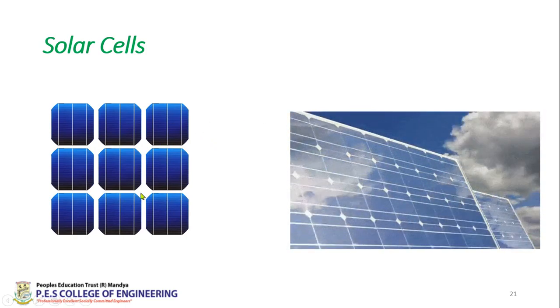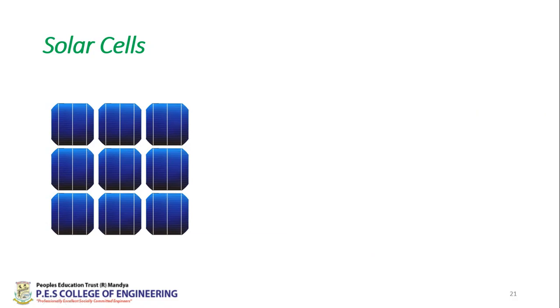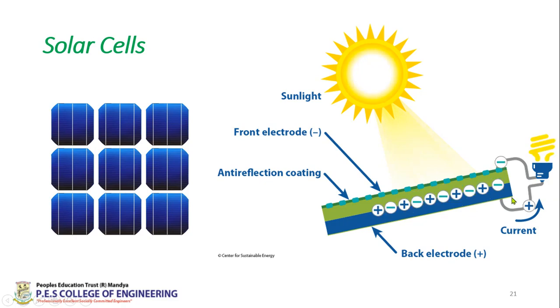Many solar cells are arranged in rows and columns so we can generate more current or voltage. The basic operation is this: as light falls on the solar cell, the valence electrons get excited and escape their orbits. When I connect it with an appliance—here you can see a bulb—the circuit becomes closed. There is a flow of electrons and holes. Whenever an electron is excited out, you create a hole. The more electrons that escape, the more holes are generated, and current starts flowing.